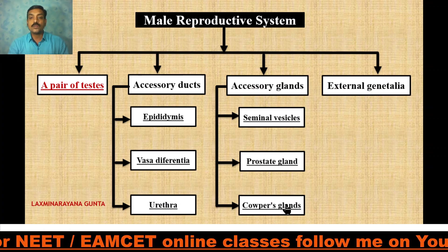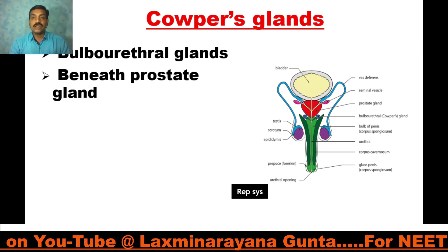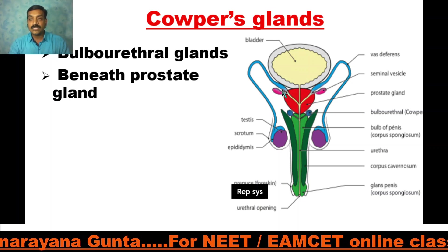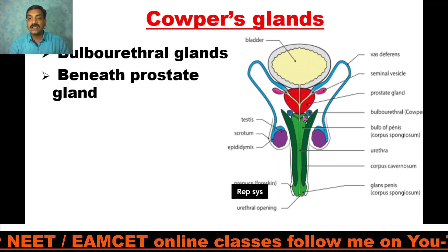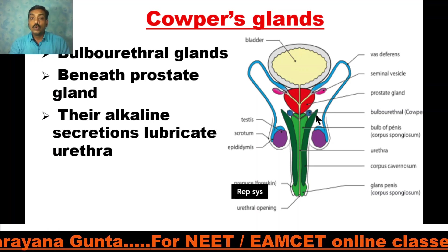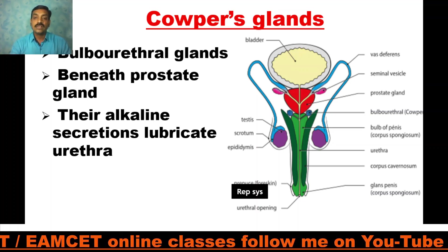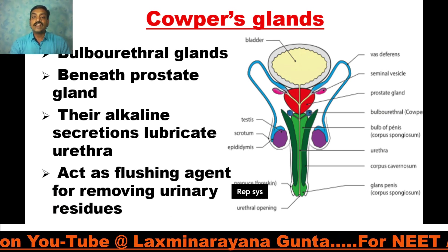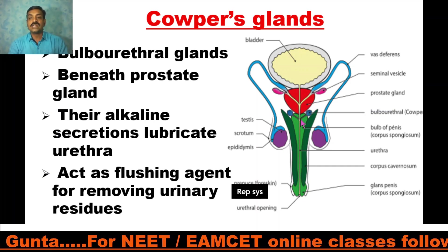The Cowper's glands, also called bulbourethral glands, are paired glands present beneath the prostate gland. Their secretion is alkaline and lubricates the urethra. Since the urethra is a sharing duct for both the reproductive and excretory systems, the Cowper's gland secretion acts as a flushing agent to remove urinary residues.